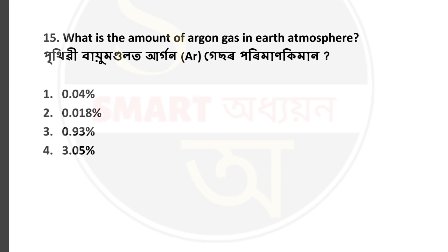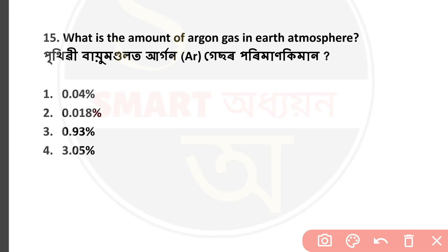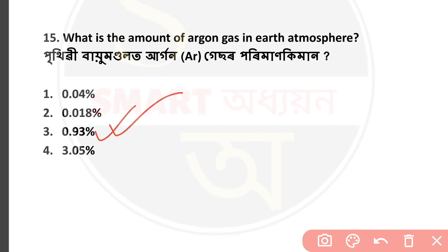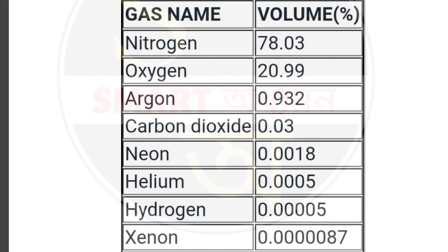Question number 15: What is the amount of argon gas in the Earth's atmosphere? How many percent argon gas is present in our total atmosphere? The answer is 0.93 percent. Option number 3 is correct. Please take a screenshot of the atmospheric gas composition breakdown shown here.